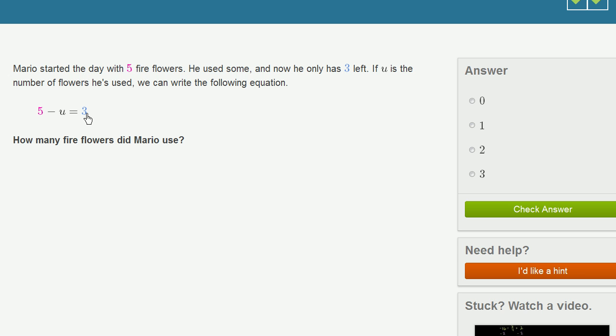So there's a bunch of ways that you could do it. One way is you could probably do this in your head. I took away some number from five and I got three. And you probably know, well if I take two away from five I'm going to get three, so he used two flowers.